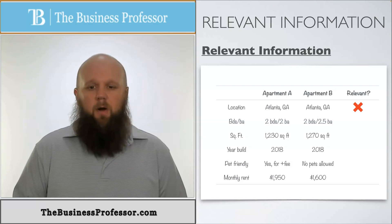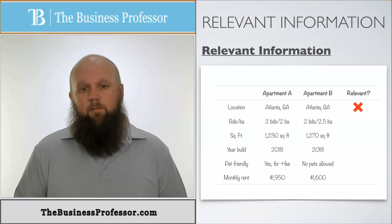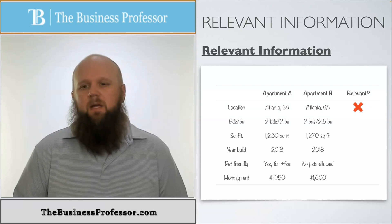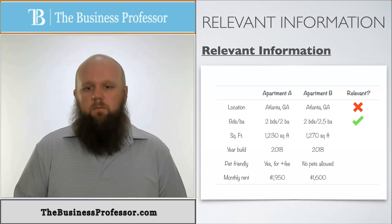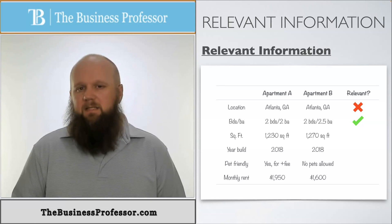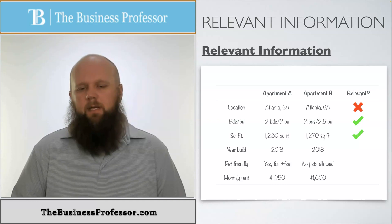Now, the beds and the baths. Apartment A is a two-bedroom, two-bath, whereas apartment B is a two-bedroom, two-and-a-half bath. So there is a difference, and that is something that's potentially relevant to the decision that we're making — maybe you want that extra half bath, so that would be relevant. And square footage: apartment A is 1,230 square feet, whereas apartment B is 1,270 square feet. Absolutely, that's relevant because it's different among options, it's relevant to the decision, and it's something that's going to be dealt with in the future as we're going to be living here. So that would be relevant.